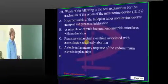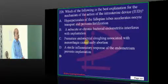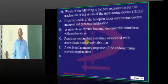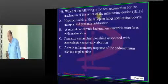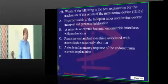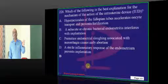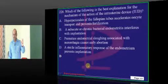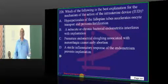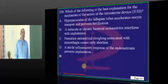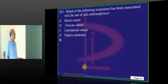Coming to the intrauterine device — how does it basically provide contraception? This is an important question. It typically leads to a sterile endometritis. The endometrium gets inflamed and will be hostile for any implantation. That is the mechanism of IUCD.